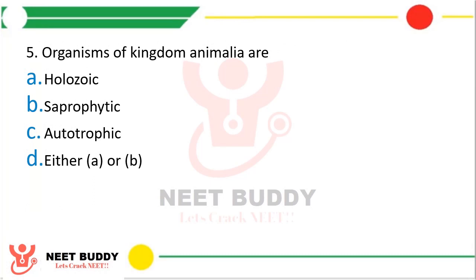Question 5: Organisms of kingdom Animalia are option A holozoic, option B saprophytic, option C autotrophic, or option D either A or B. The kingdom Animalia contains organisms which are either holozoic or saprophytic.